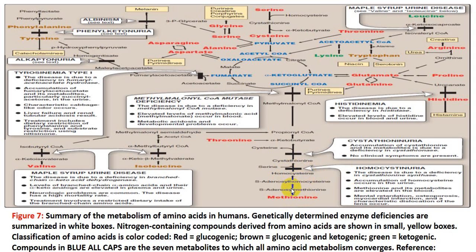Homocystinuria causes mental retardation, osteoporosis, myocardial infarction, and dislocation of the limbs. The figures explained show the causes of these diseases resulting from enzyme deficiencies required for amino acid metabolism.